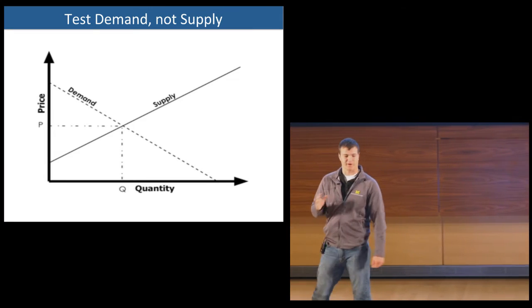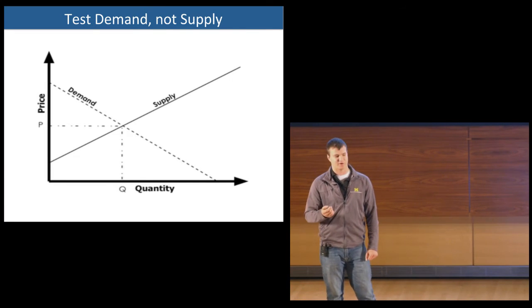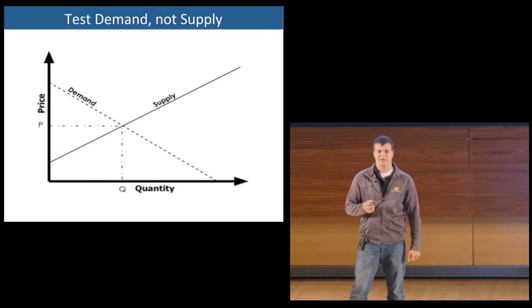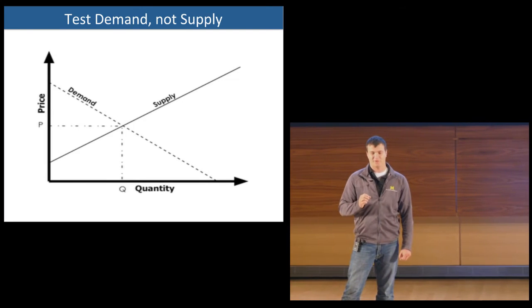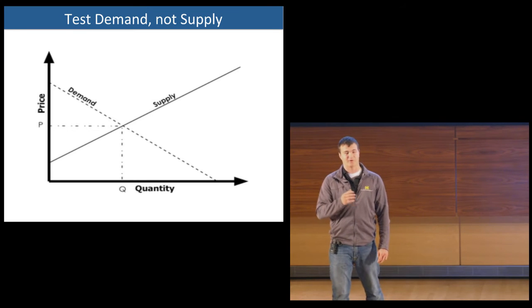After we've done this 100 times, it's time to test our solution in an experiment. The key takeaway here is to build what we can sell and not sell what we can build.